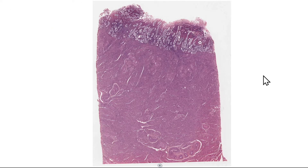The normal menstrual cycle, which occurs over 28 days, is divided into three phases. Day 1 to day 5 is considered menses or menstruation. Day 5 to day 14 is the proliferative phase. And then day 14 to day 28 is the secretory phase. So in this video we're looking at the menses phase.